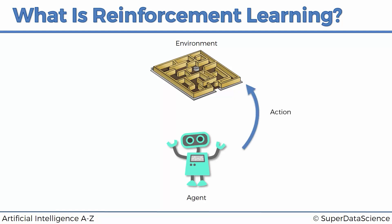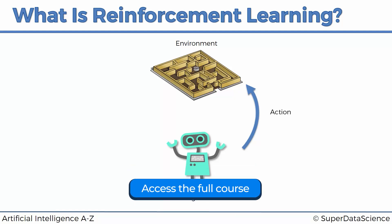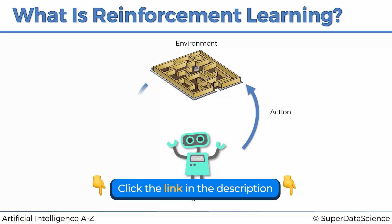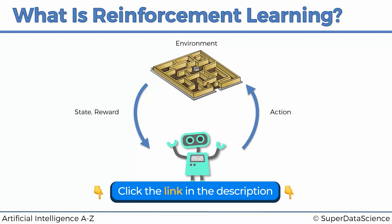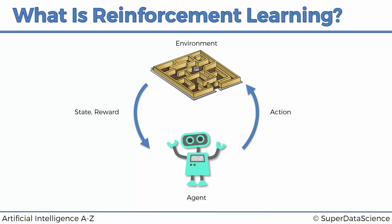The way it works is the agent performs certain actions in this environment and as a result, the state it is in will change — it might be further or closer, more to the left or right, or have certain other parameters that describe its state. So the state changes because of the action it takes, and it will also get rewards based on that action.